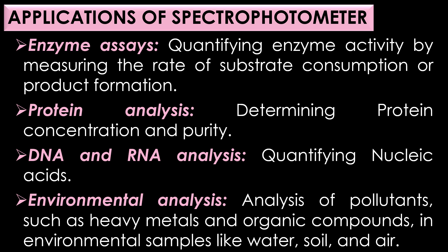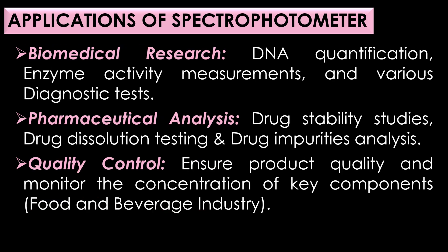In protein analysis, spectrophotometer is used for determining protein concentration and protein purity. In DNA and RNA analysis, spectrophotometer is used for quantifying nucleic acids. In environmental analysis, spectrophotometer enables the analysis of pollutants such as heavy metals and organic compounds in environmental samples like water, soil and air.